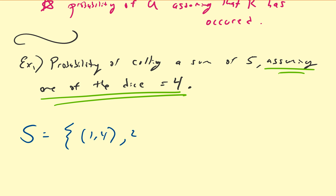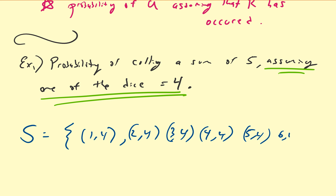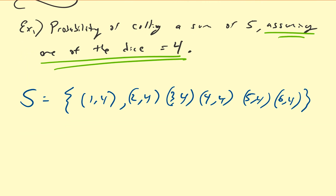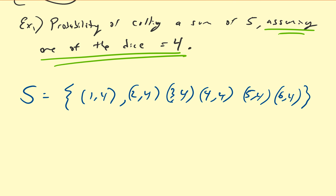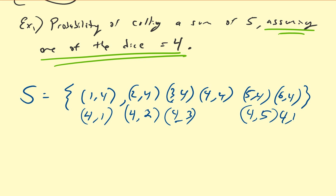So we have (1,4), (2,4), (3,4), (4,4), (5,4), (6,4). But there are also other values, because you could have a 4 on the first die as well: (4,1), (4,2), (4,3), (4,5), (4,6). Remember you cannot count (4,4) twice. So how many values do we have in the sample space? The sample space is going to be 6 plus 5, so that's equal to 11.